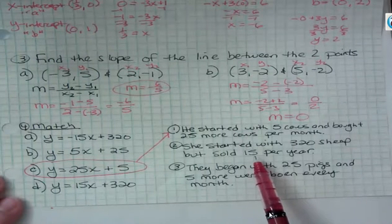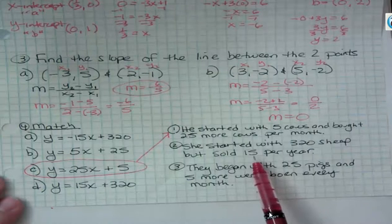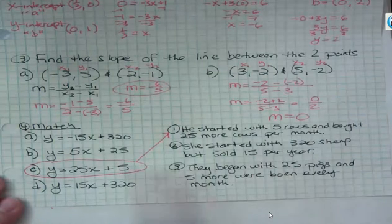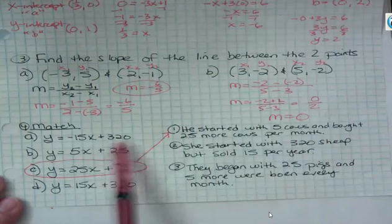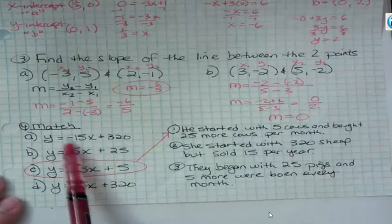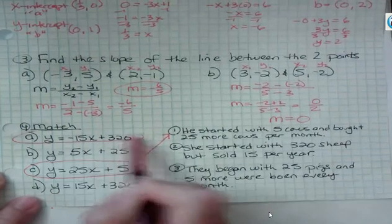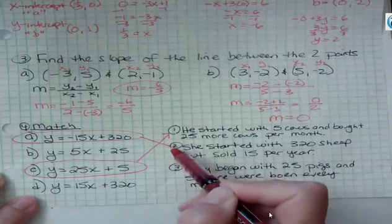Flock of sheep. Well, she's selling them. So it should be getting less, and so our rate of change should be negative. Here's the one that has a negative. She's starting with 320, but she's seeing a decrease in her flock by 15 per year. So it must be that this one is matched with this one.